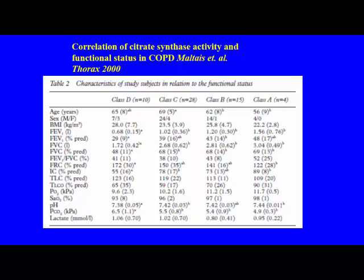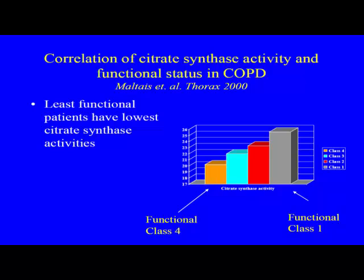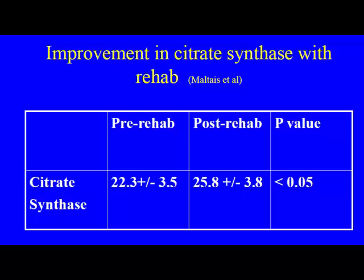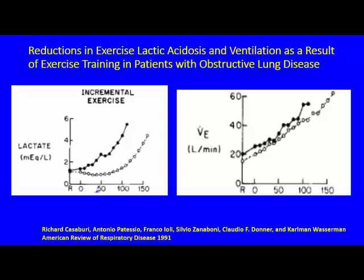As expected, citrate synthase levels were much higher in functional class A compared to functional class D. The study also demonstrated improvement in enzyme levels pre- and post-rehab. Other pulmonologists, including Richard Casaburi and Wasserman, looked at lactic acid and ventilation and found improvements in both with exercise. This provides strong biochemical support for the use of pulmonary rehab.